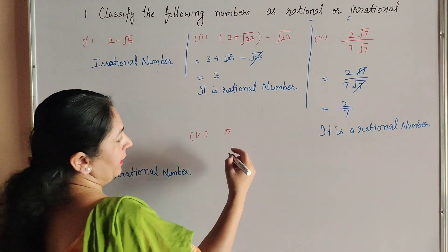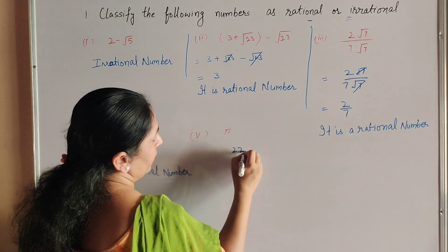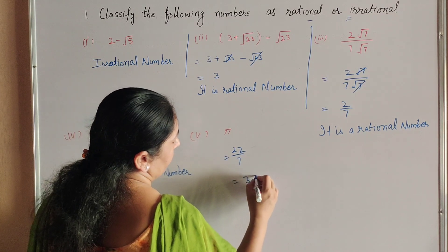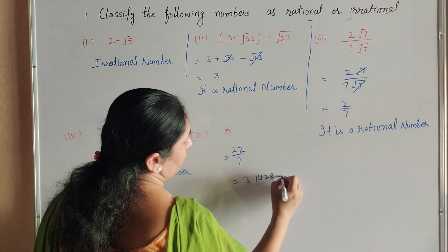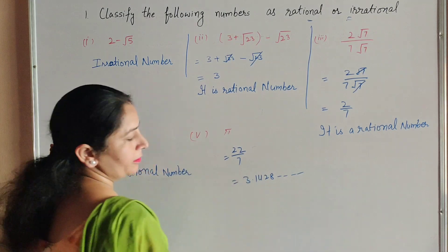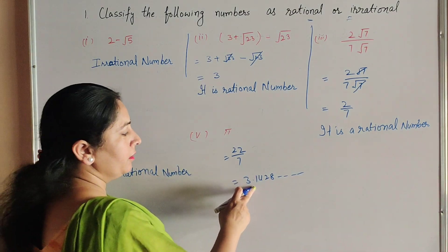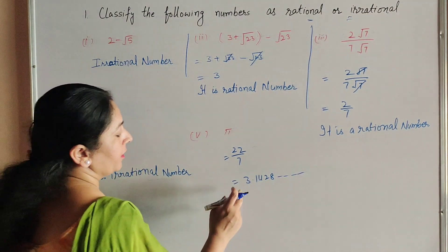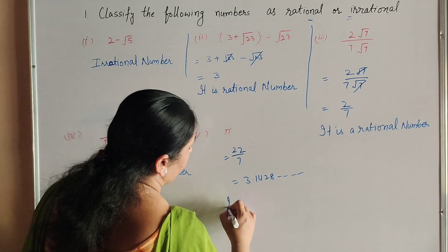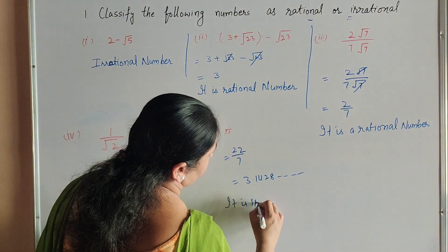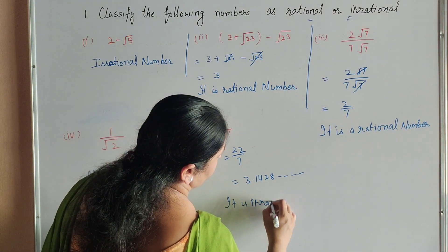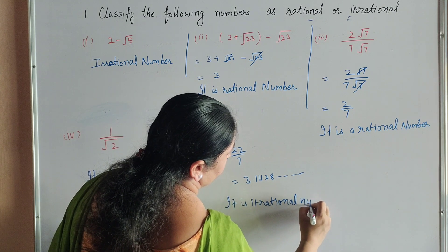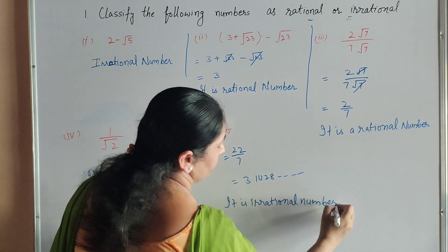Now we move to the fifth part: pi. Its value is 22 over 7. So 22 divided by 7 gives the answer 3.1428 and so on. This is non-terminating and not repeating, so it is an irrational number. The speaker then also refers to pi as a rational number.